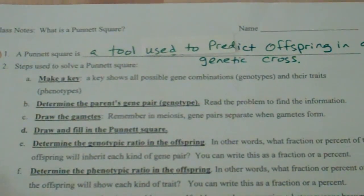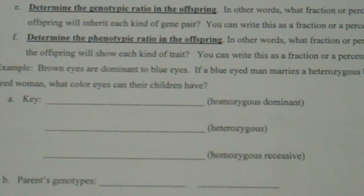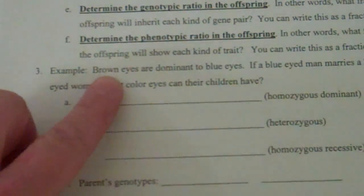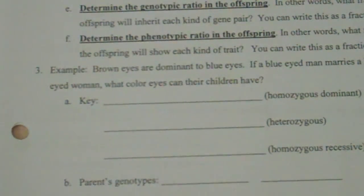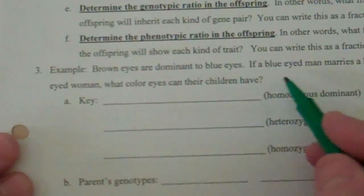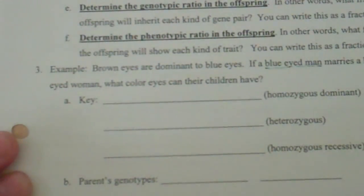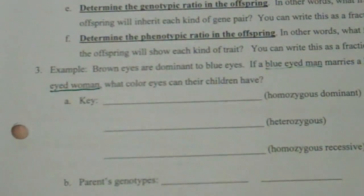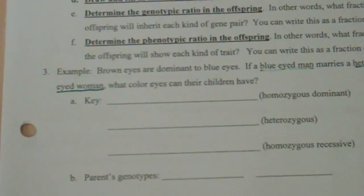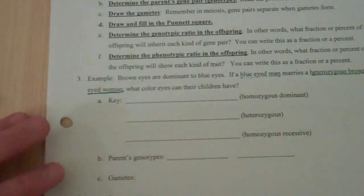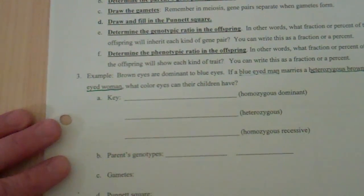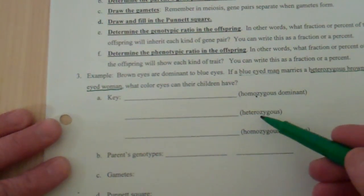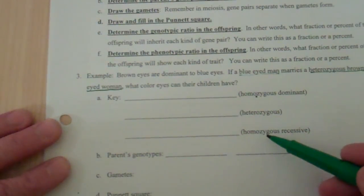So I'm going to jump down to the example and fill this out with me. The example says: brown eyes are dominant to blue eyes. If a blue-eyed man marries a heterozygous brown-eyed woman, what color eyes can their kids have? We want you to start out making a key in this order every time. We're going to list the homozygous dominant genotype first, then heterozygous, then homozygous recessive.